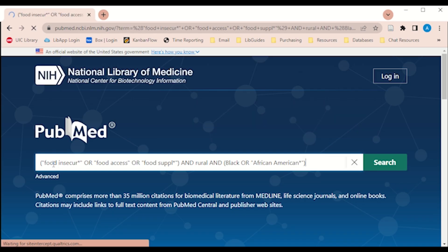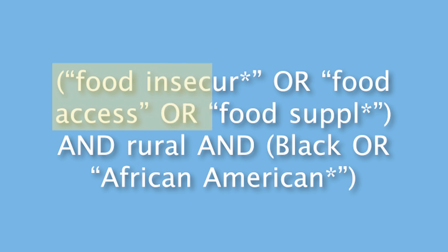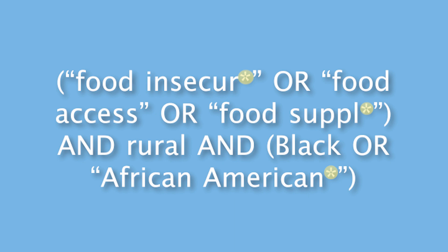Note that parentheses go around an entire concept rather than individual terms. Words that you want multiple endings for need the asterisk. For example, for the word insecurity, we may want to accept insecure or insecurities in our search — that's why we typed out I-N-S-E-C-U-R with that asterisk to indicate this.